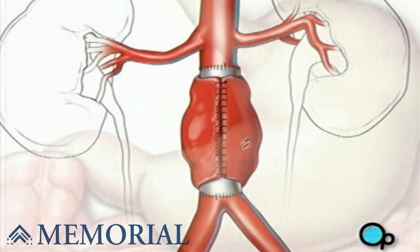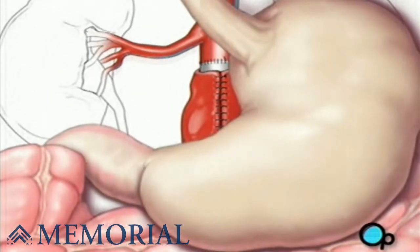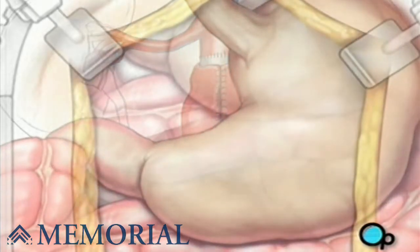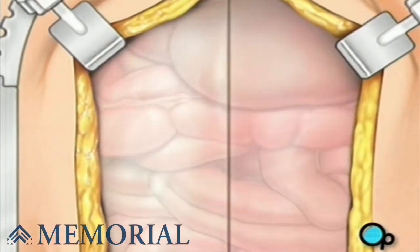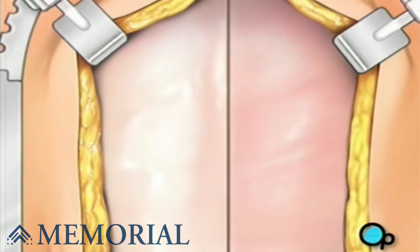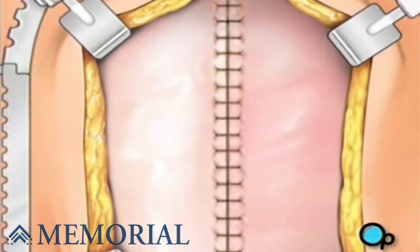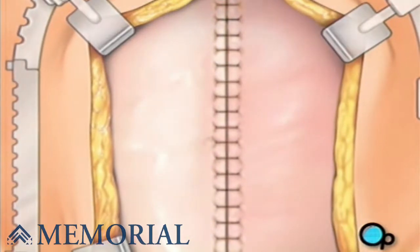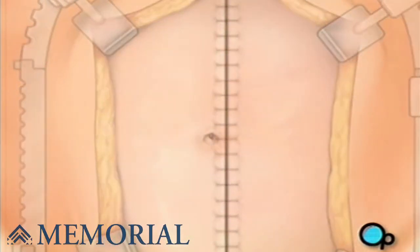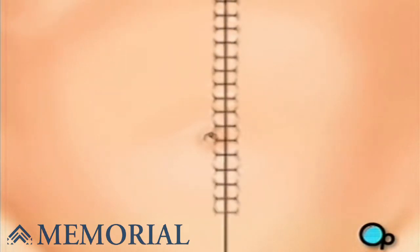Your doctor will restore all internal organs to their proper positions. The muscles and other tissue can then be closed with sutures. Finally, the skin is closed with staples and a sterile dressing is applied.